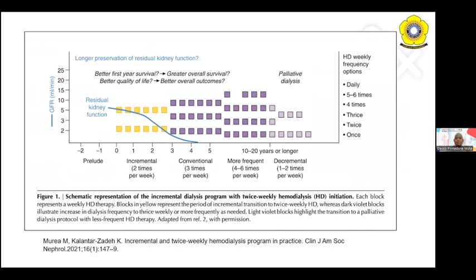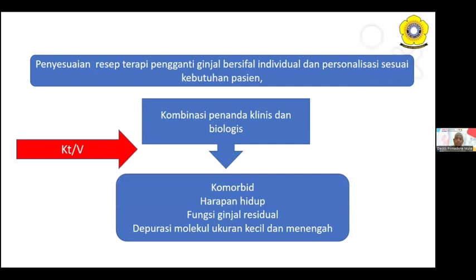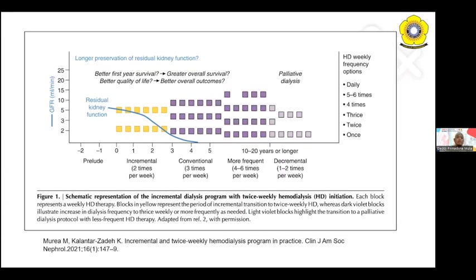Penyesuaian resep terapi pengganti ginjal bersifat individual dan dipersonalisasi sesuai kebutuhan pasien. Prediktornya adalah petanda-petanda klinis yang sudah disebutkan sebagai kriteria incremental dan juga pemeriksaan biologisnya. Pada residual kidney function awalnya masih terlihat, tetapi seiring dengan waktu kondisi ini akan semakin menurun. Yang paling baik adalah dengan kita melakukan incremental, misalnya dua kali per minggu hemodialisisnya.